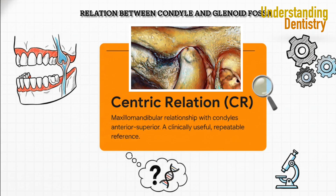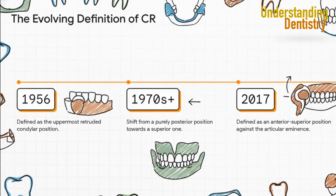It's a place to build from when a patient's natural bite is just a mess. What's really fascinating, though, is that this definition has not been set in stone. Look at this timeline — it's evolved significantly. Back in the 50s, CR was defined as the most retruded or rearmost position possible. But over the decades, that point has literally migrated forward and upward to the anterior superior position we talk about today. This constant shifting is exactly where the controversy really kicks off.